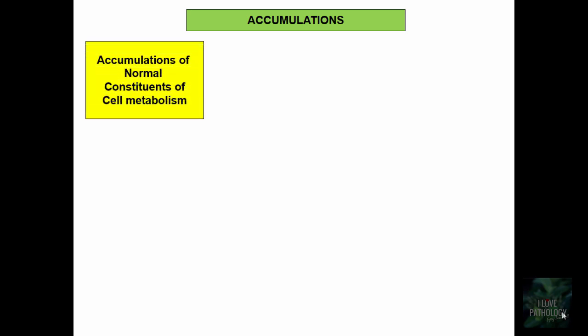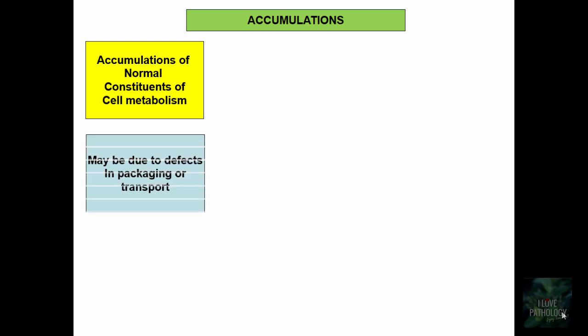Let us understand why these cells get accumulated with abnormal substances. The basic reason could be accumulations of normal constituents of cell metabolism — maybe due to defects in packaging or transport. We will discuss accumulation of fats, accumulation of proteins, and accumulation of carbohydrates.